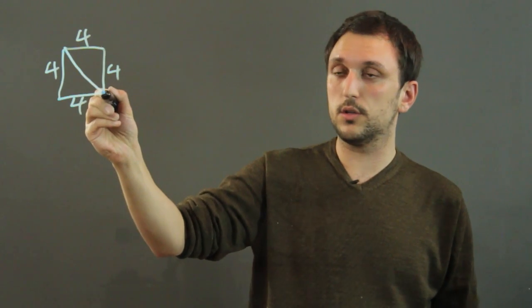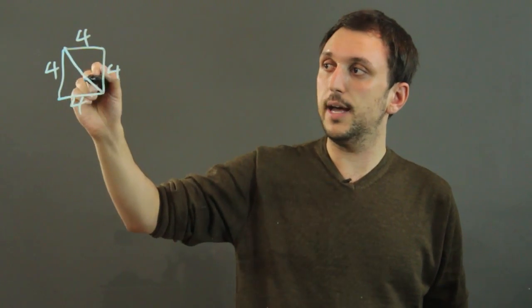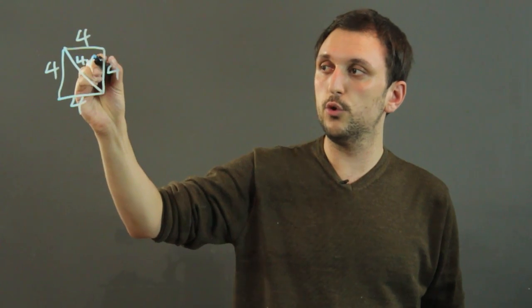Now, if you want to know the diagonal distance across the square, then that is going to be 4 root 2.